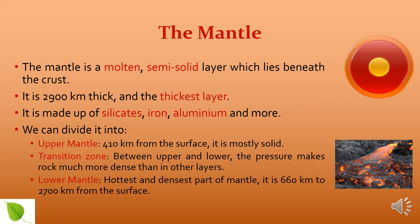The upper mantle is 410 km from the surface and is mostly solid. The transition zone is between the upper and lower mantle, where the pressure makes the rock much more dense than in other layers. The lower mantle is the hottest and densest part of the mantle, ranging from 660 km to 2,700 km from the surface.